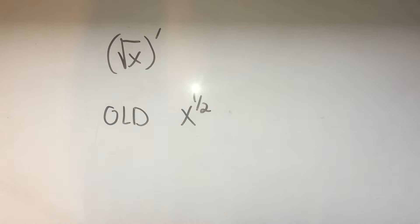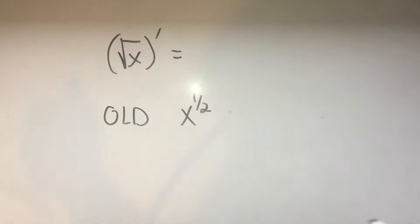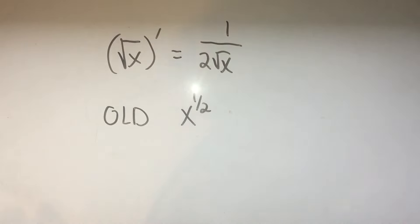But what we're going to do is just memorize our own trick, and the trick is the derivative of a square root is one over two times the square root, and you're done. It's simple as that.